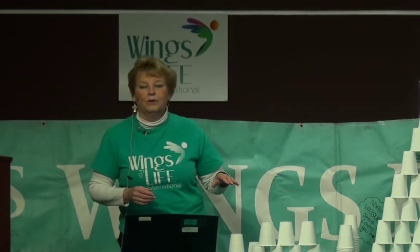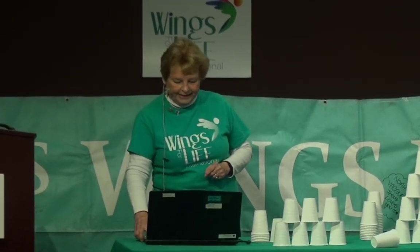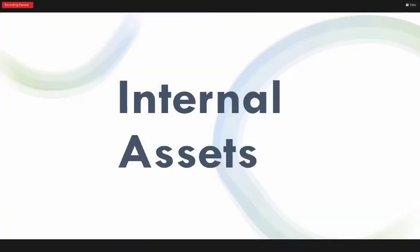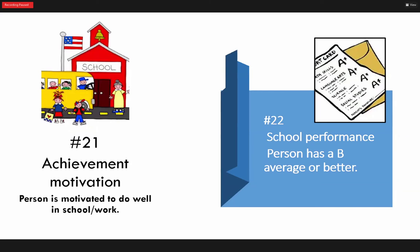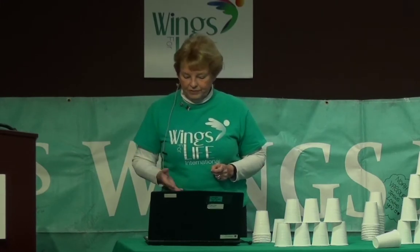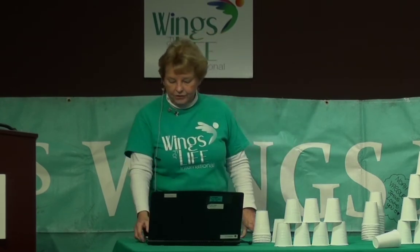Now we're going to talk about the internal assets — what's on the inside. All the first 20 were outside influences. Number 21 is achievement motivation — a person is motivated to do well in school or work. Are you motivated? Do you want to do well? Number 22 is school performance — a person has a B average or better. Are you doing A-quality work at your job, or are you spending all your time on your cell phone not paying attention? Are you giving A-quality work? It's key to how you feel about yourself.